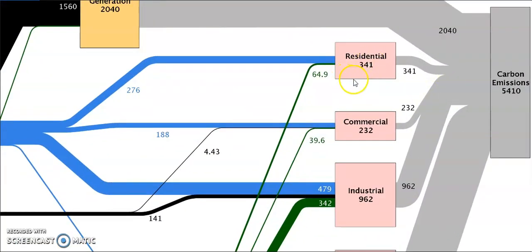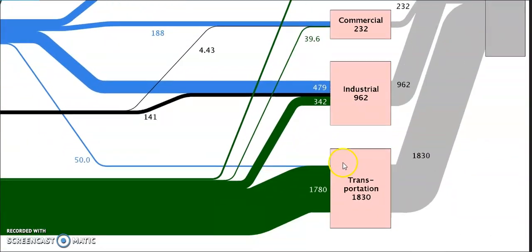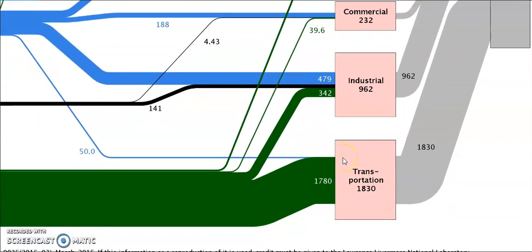For residential purpose the total carbon emission is 341 million metric tons. For commercial it is 232. And for industrial it is 962. And for transport it is 1,830 million metric tons.